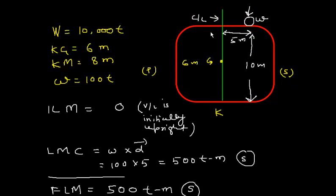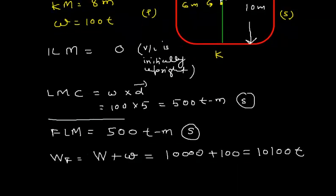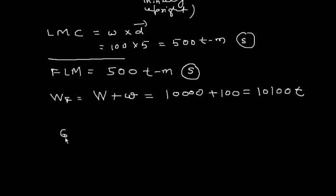Now suppose we load something in the vertical direction and we didn't load on the centerline, or even if we loaded on the centerline, loading in the vertical direction will shift the center of gravity upward. G shifts to G1 — the center of gravity shifts towards the weight loaded. Since the weight is loaded on the upward side, the center of gravity also shifts in that direction. The shift GG1 is given by the formula: GG1 = w × d divided by W_final. This shift is upward.